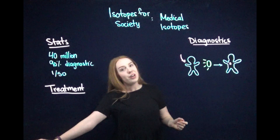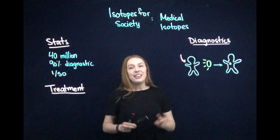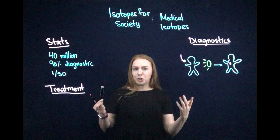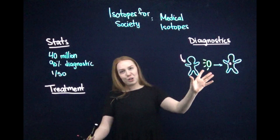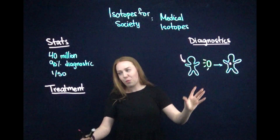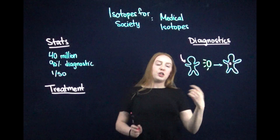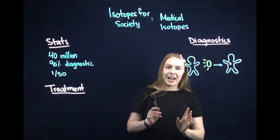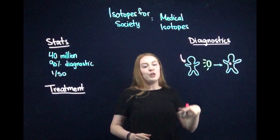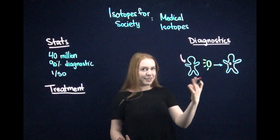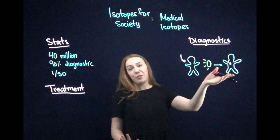So how does this work? When an isotope decays, it lets off a certain amount of energy, and we know the energy that we're looking for for the isotopes that we use. So we can set our detector to a specific sensitivity so that it only picks up the one we're looking for.